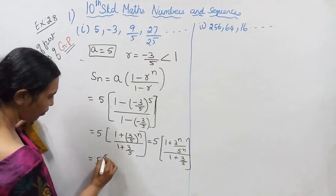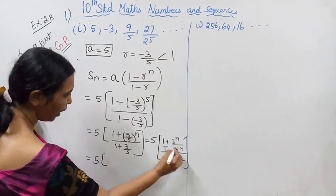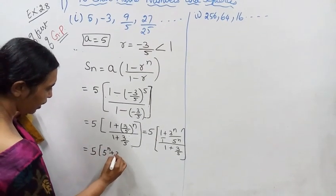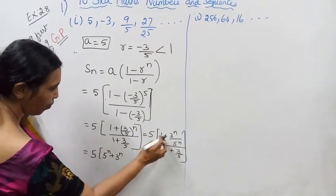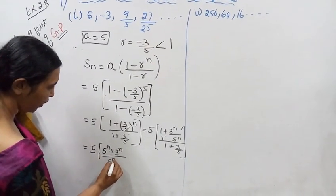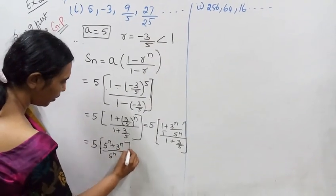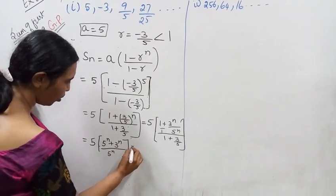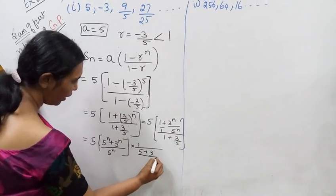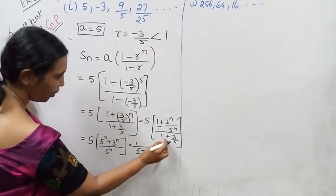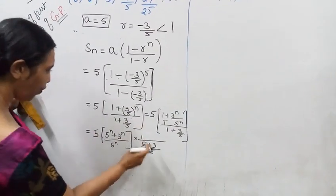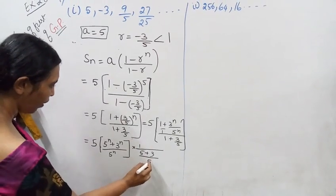5 LCM. LC. 5 power n plus 3 power n. 5 power n plus 3 power n, divided by 5 power n. This is the denominator, into 1 by 5 plus 3 by 5. So 5 plus 3 by 5. Now 5 is 5.